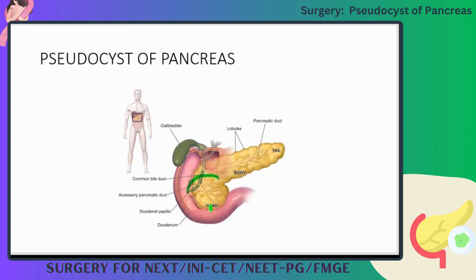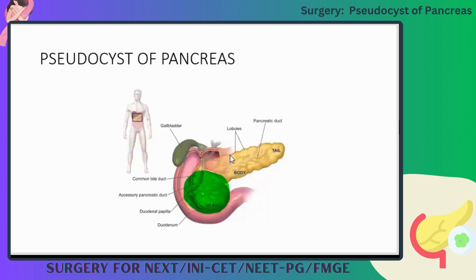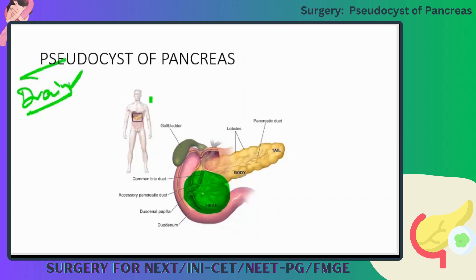This is the pancreas, and this is the pseudocyst. After how many days does it form? It takes 4 to 6 weeks. The patient is complaining of pain, and if you leave the pseudocyst it may obstruct the duodenum. So what do you do? You have to drain it. Will you drain it outside or inside?